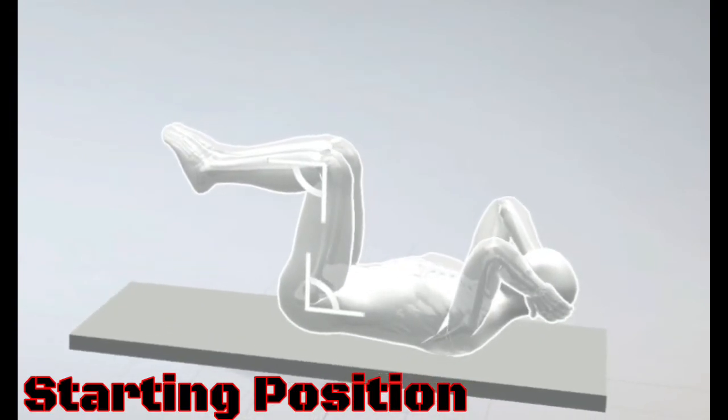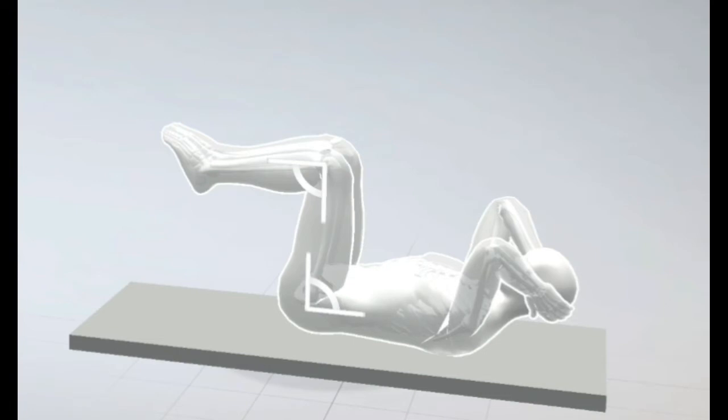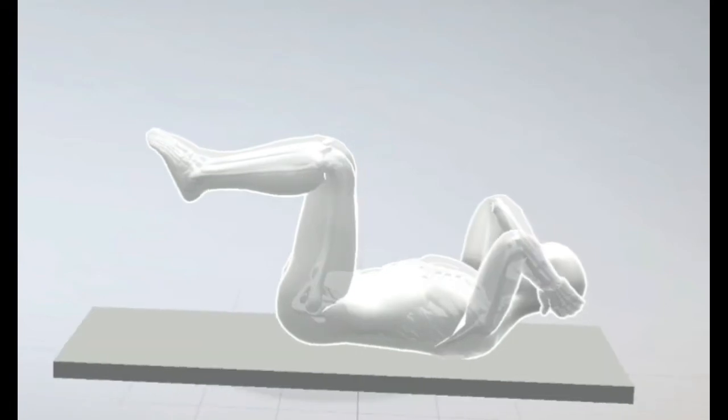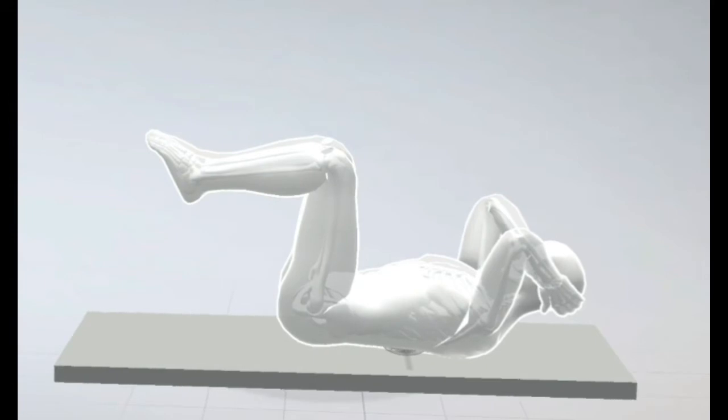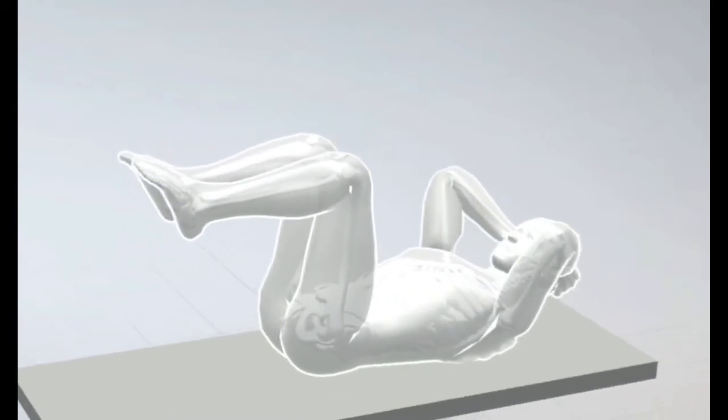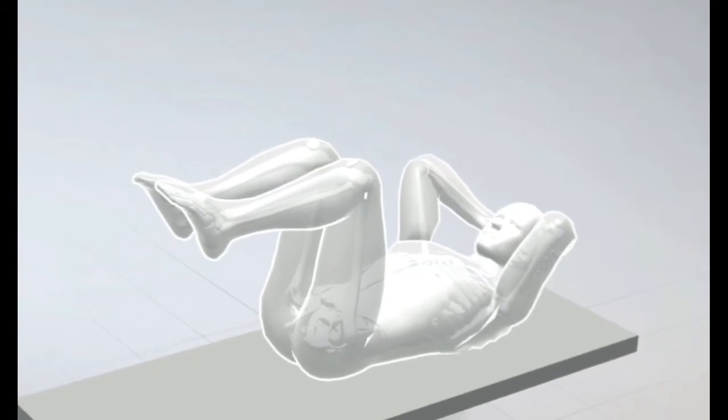Lay on a mat and bend the hips and knees at approximately 90 degree angle. Keep the middle back glued to the mat. Hold the chin straight and look forward.